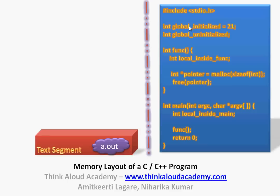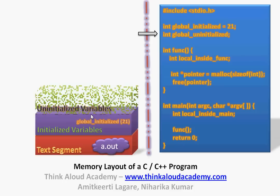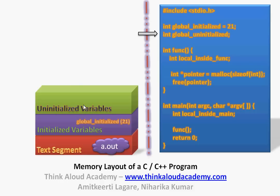In this program, there is a variable called global initialized. You might have some variables which are global and initialized — in this case, I have initialized it to 21. What happens is we have another set of memory specifically reserved for all global variables that have been initialized, so my variable goes and sits there as 21. You will also see a variable called global uninitialized — I have not given any value to it. In the memory of the process, there is one more segment called uninitialized variables, and global uninitialized goes and sits in that particular memory.